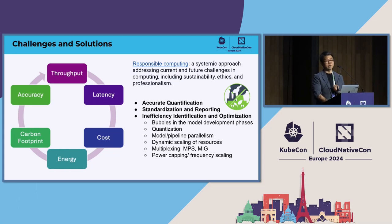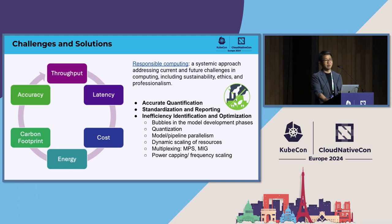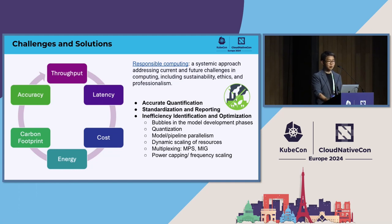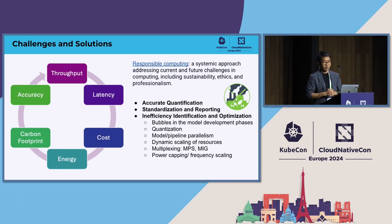What technologies are possible? Accurate quantification is really important — when using resources, you need to be accurate about energy numbers and have standardization across cloud infrastructures and vendors. You also need to identify inefficiencies and optimize. During training and pipelining, you need to eliminate bubbles — idle cycles on your resources — by keeping all pipelines full.